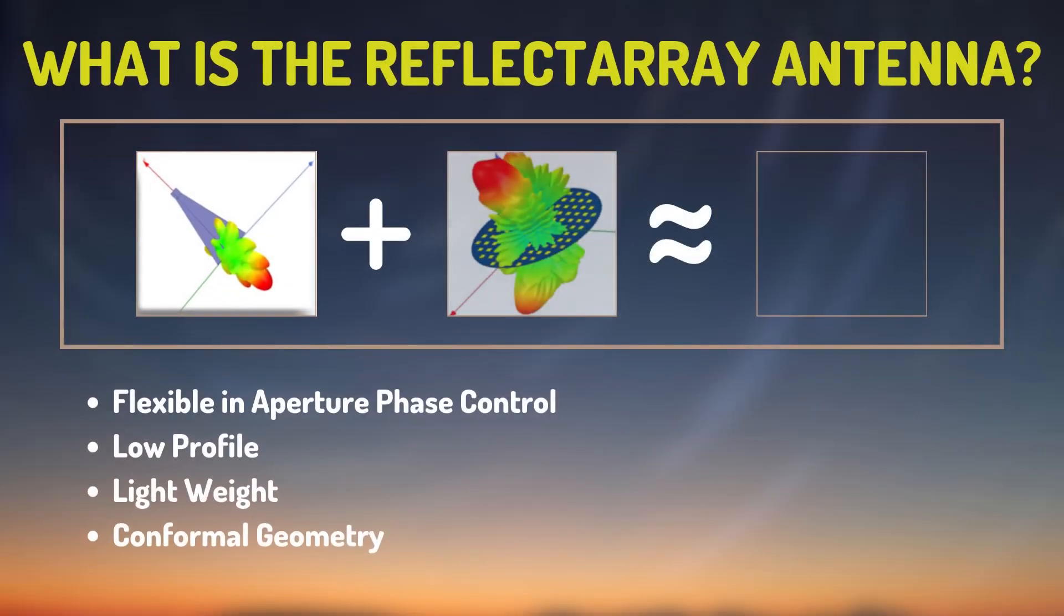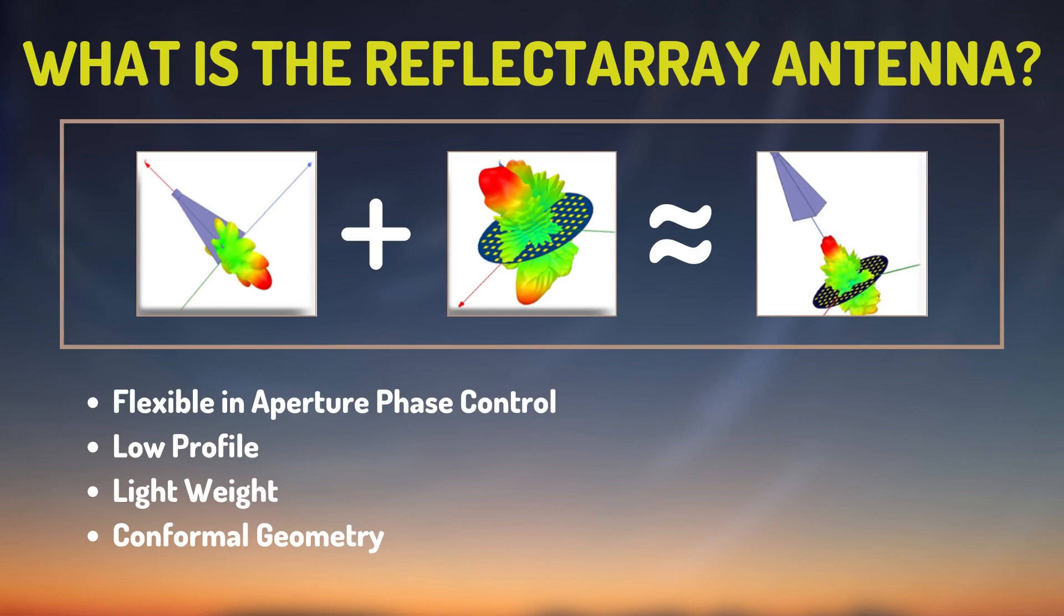The Reflectarray is an antenna with a flat reflecting surface consisting of hundreds of elements on its aperture and an illuminating feed antenna.